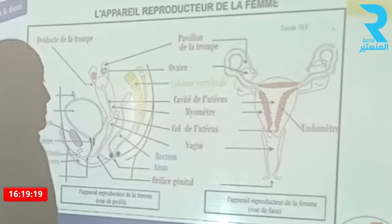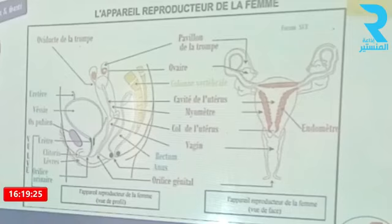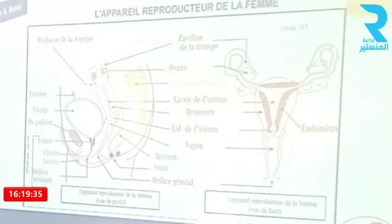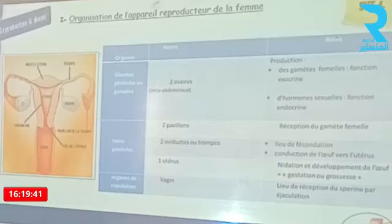Le vagin existe en position interne avec l'orifice génital. L'ensemble de ces éléments repérés au niveau de l'appareil reproducteur peut être organisé dans un tableau avec le nom de chaque organe et la fonction assurée.